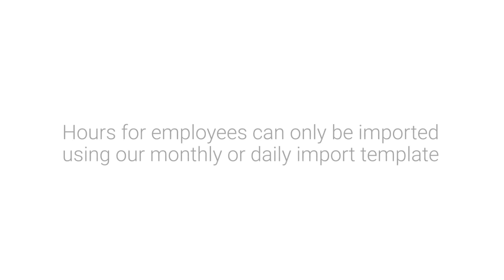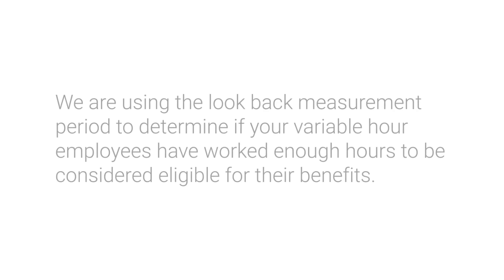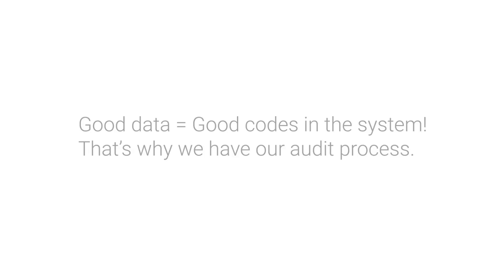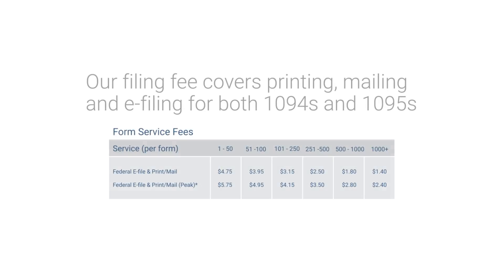Now that we have walked through our ACA tool, here are a few things to remember. Hours for employees can only be imported using our monthly or daily import template. We are using the look-back measurement period to determine if your variable hour employees have worked enough hours to be considered eligible for their benefits. Good data equals good codes in the system — that's why we have our audit process. Our filing fee covers printing, mailing, and e-filing for both 1094s and 1095s. And that's it! Thank you.